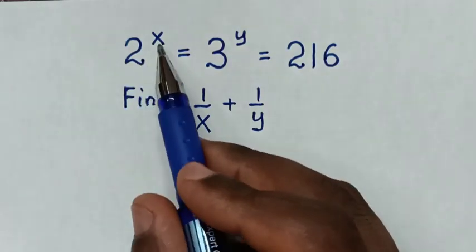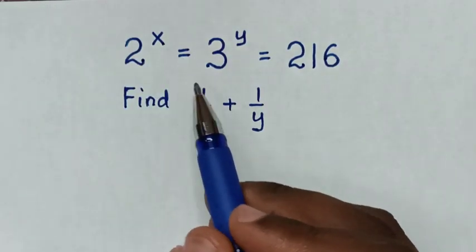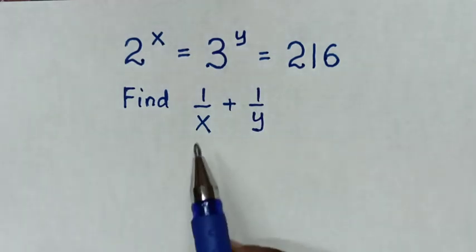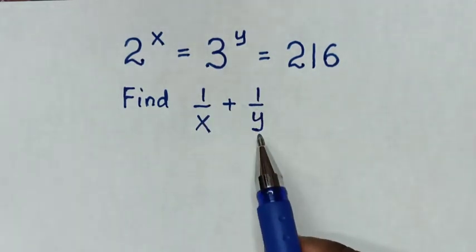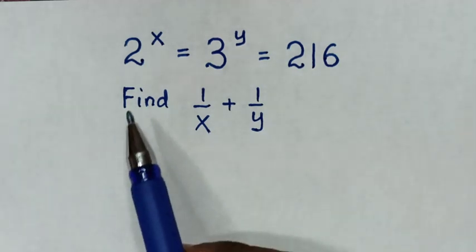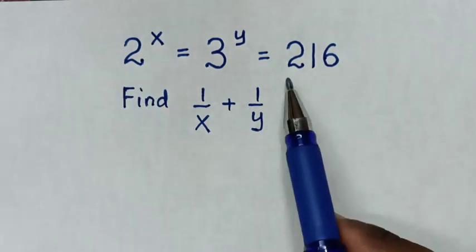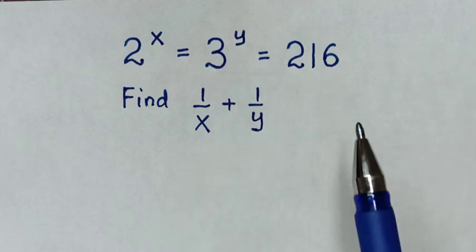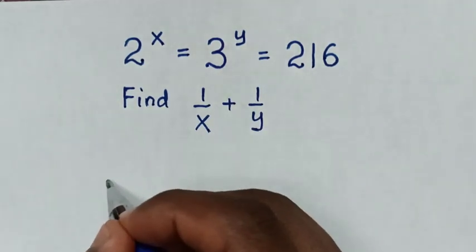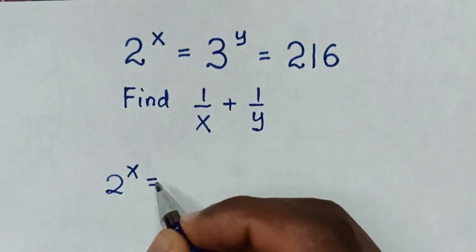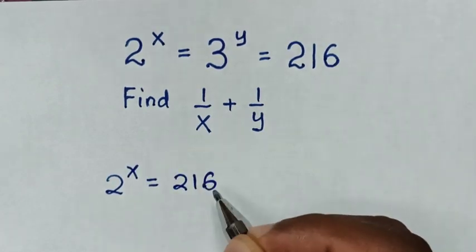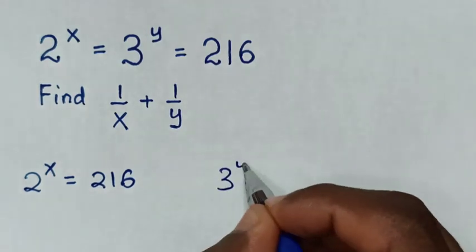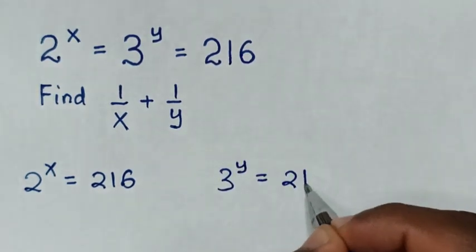Hello. Given that 2 power of x is equal to 3 power of y is equal to 216, find the value of 1 over x plus 1 over y. So from here we have two equations: 2 power of x is equal to 216, and 3 power of y is equal to 216.